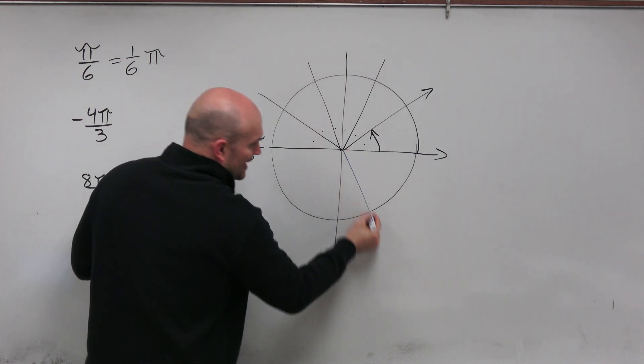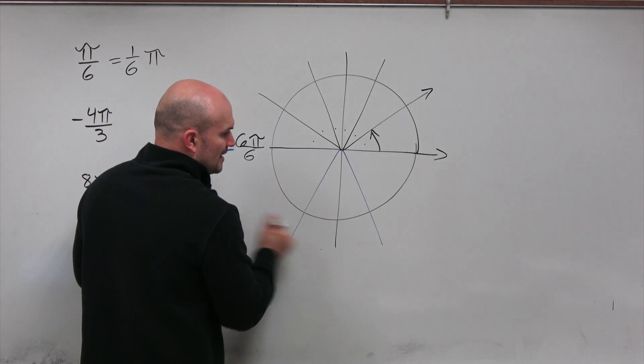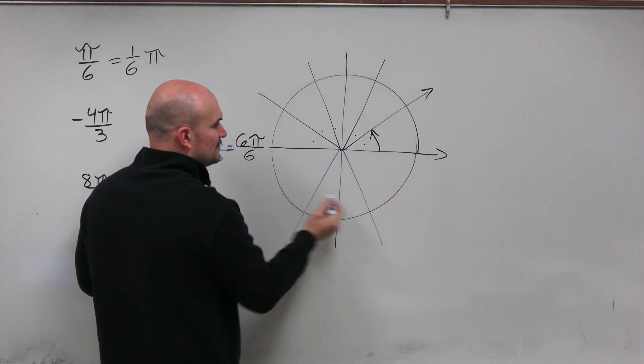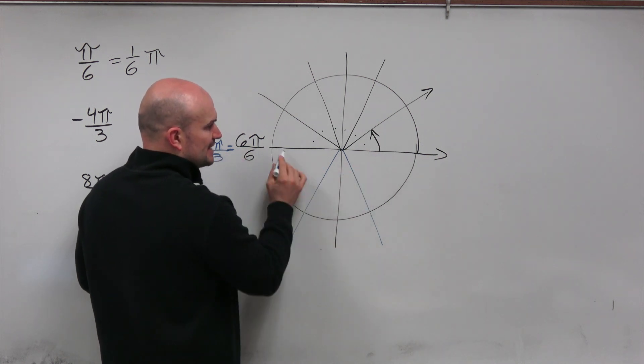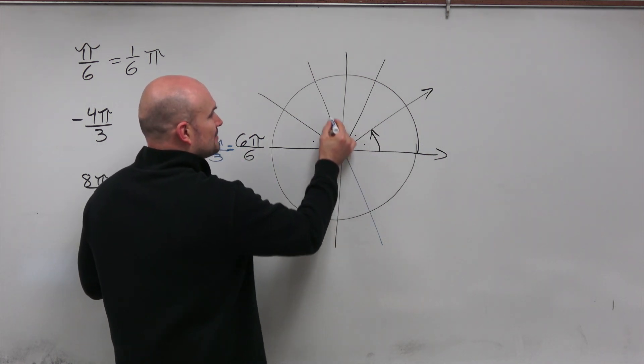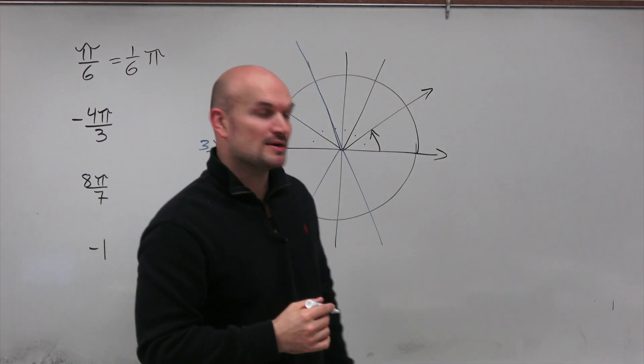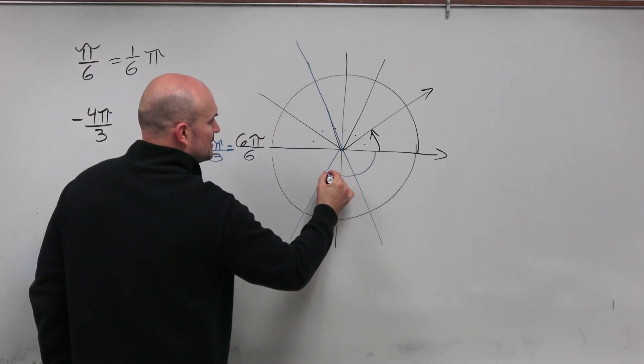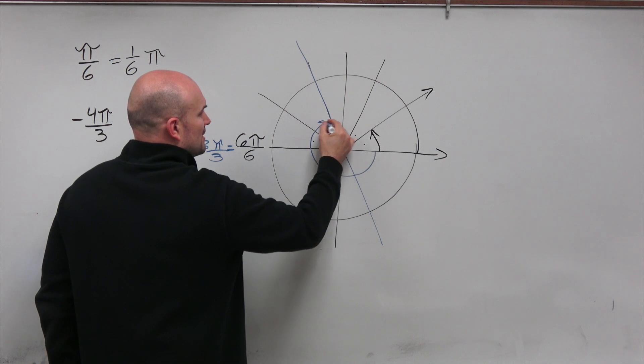But before I do that, I need to break this up into three equal parts. Now, again, don't be confused with the y-axis, but hopefully you see that I broke half this circle, which is pi, into three equal parts. And then all I simply need to do is do one more extra part. So up here, here's pi over 3, 2 pi over 3, 3 pi over 3, and 4 pi over 3.